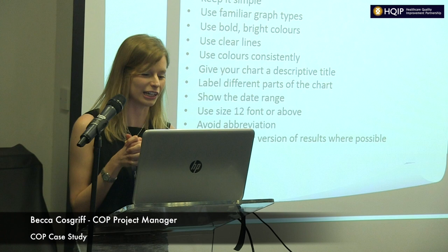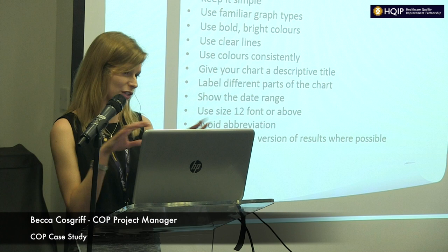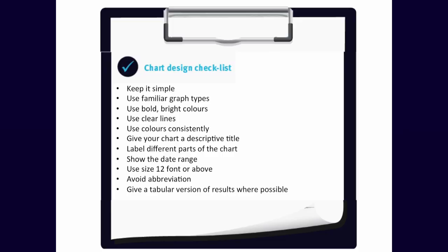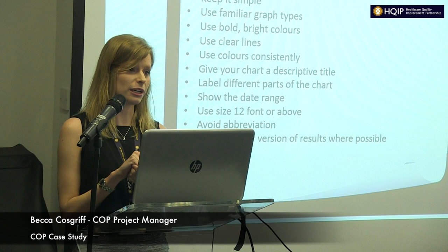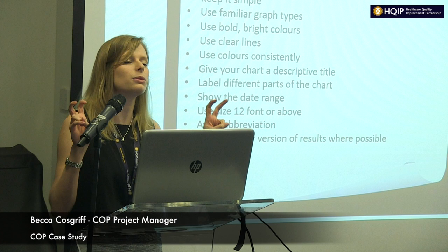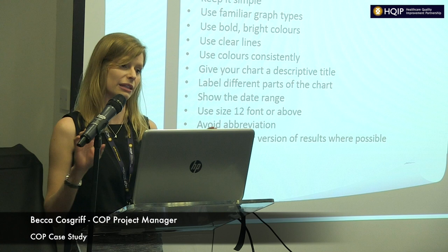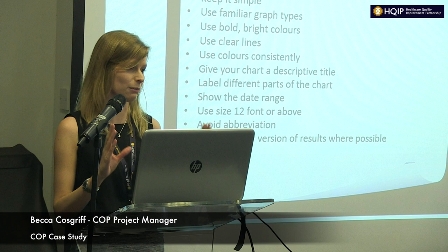The chart design checklist covers some really basic principles that are easy to forget when you're deeply familiar with your work. Remember to keep things simple, use familiar graph types, use bold bright colours that can print in black and white, use clear lines, and use colours consistently — if you label a particular procedure green in one chart, keep it green throughout the report. Give your chart a descriptive title, label all parts of the graph, show a date range, use a decent-sized readable font, avoid abbreviations, and if you can, provide a tabular version of what's shown in your chart underneath it — making it easier to digest and helping people who just don't like charts.